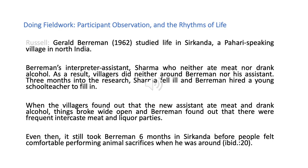Here is an example from Gerald Behrman who studied life in Shirkanda, a Pahari-speaking village in North India. Behrman started out with an interpreter assistant, Sharma, who ate neither meat nor drank alcohol. When he started work with his assistant, the villagers said they neither ate meat nor drank alcohol, and he couldn't see them doing this. But three months later, Sharma fell ill and Behrman hired a young school teacher to fill in. When the villagers found that the new assistant did eat meat and drink alcohol, things broke wide open and Behrman found that there were often intercaste meat and liquor parties — he didn't find out until the villagers felt they could tell him.